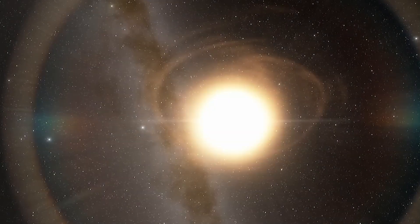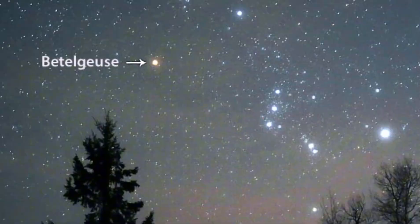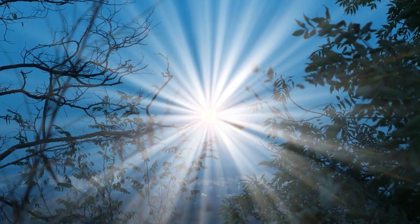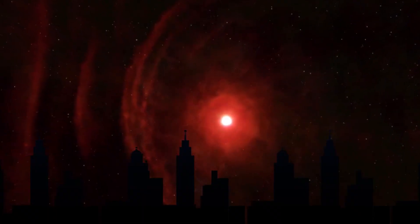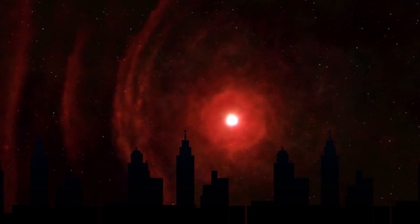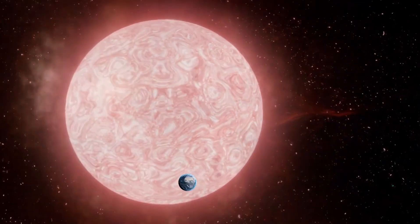However, will it pose any danger to Earth? A supernova occurring within a few tens of light-years from Earth would have serious consequences, including harmful radiation exposure. The danger zone for these effects is estimated to be around 100 light-years. Fortunately, Betelgeuse is beyond this range, so we are safe from harm.